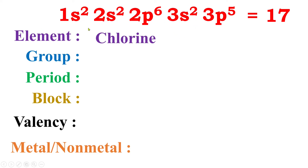If the inner shells of an element are filled with electrons — just like the first orbit is filled with 2 electrons and cannot hold more than 2, and the second shell is filled with 6 plus 2 = 8 electrons and cannot hold more than 8 — and only the third shell, the outer shell, contains 7 electrons, it means the valence electron count is 7.